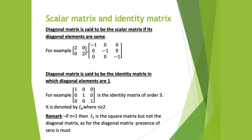A diagonal matrix is said to be the identity matrix when its diagonal elements are 1. The restriction for identity matrix is that its diagonal elements must be 1. You can clearly see the difference between the scalar matrix and identity matrix: in a scalar matrix, the diagonal elements must be the same but they can be any real number. But in the identity matrix, the restriction is that the diagonal elements must be equal to 1 only. It is the identity matrix of order 3, denoted by I_n, where n is the order of the matrix.